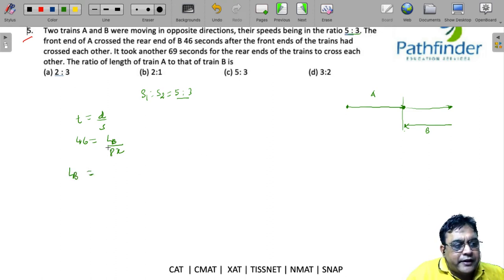What else? It took another 69 seconds for the rear ends of the trains to cross each other. So effectively train A crossed train B in 46 plus 69 seconds.